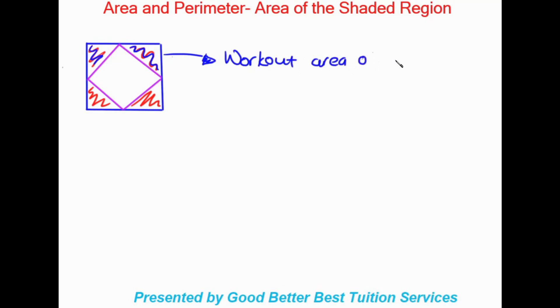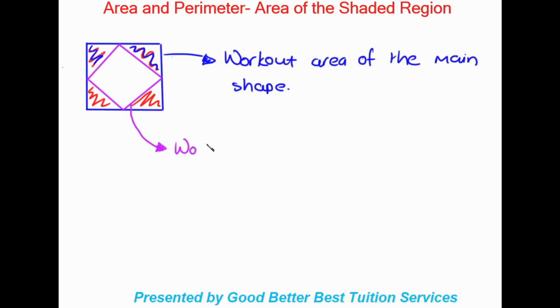The way that we do this is: first, we need to work out the area of the main shape — the one that has the other shape on the inside of it. We need this area to find the area of the shaded space. Once we've worked out the area of the main shape, we then work out the area of the secondary shape — we'll call it the 'other shape'.